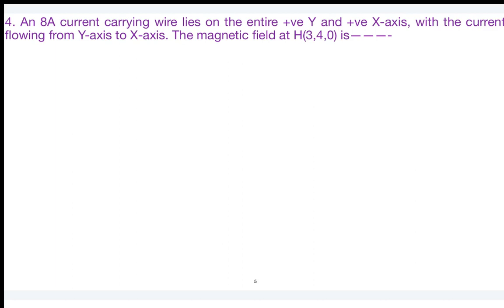Next question: an 8-ampere current-carrying wire lies on the entire positive y-axis and on the positive x-axis, with current flowing from the y-axis to the x-axis. Find the magnetic field intensity at (3, 4, 0). First, represent this configuration in a diagram with x and y axes.